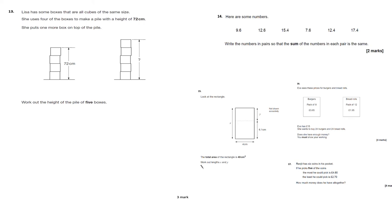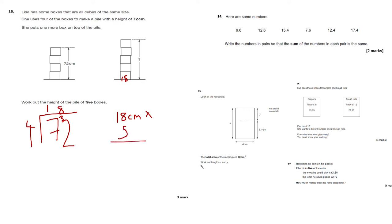Question 13: Lisa has boxes that are all cubes of the same size. Four boxes make a pile 72 cm high. Height of one box = 72 ÷ 4: 4 into 7 is 1 remainder 3; 4 into 32 is 8. Each box is 18 cm tall. Height of 5 boxes = 18 × 5: 8×5 = 40, carry 4; 1×5 = 5, add 4 = 9. The height of five boxes is 90 centimetres.